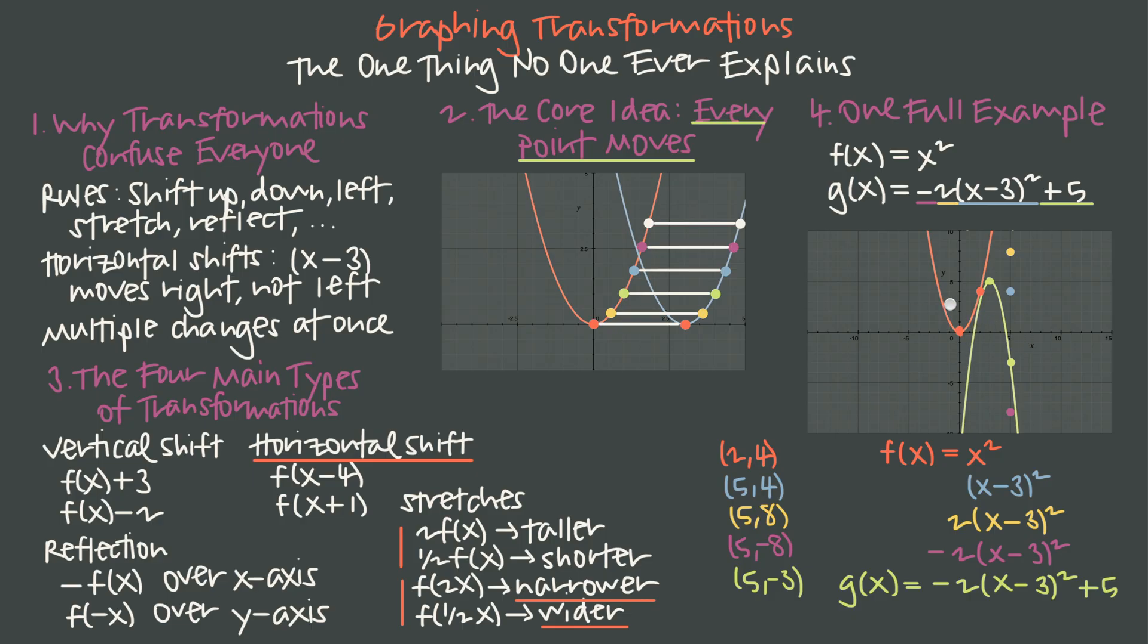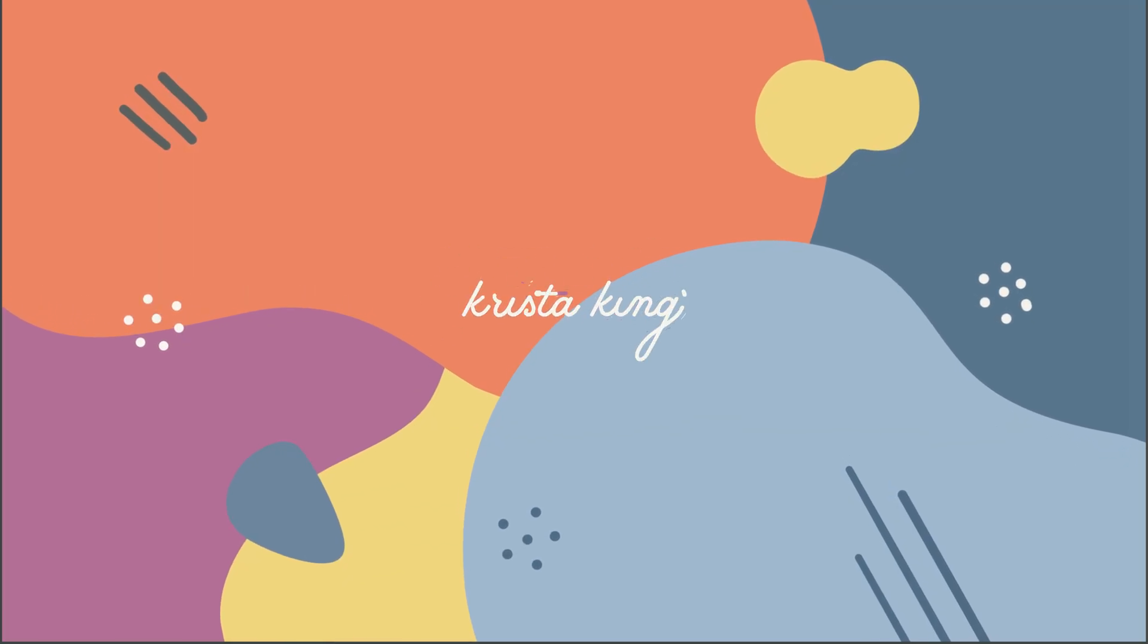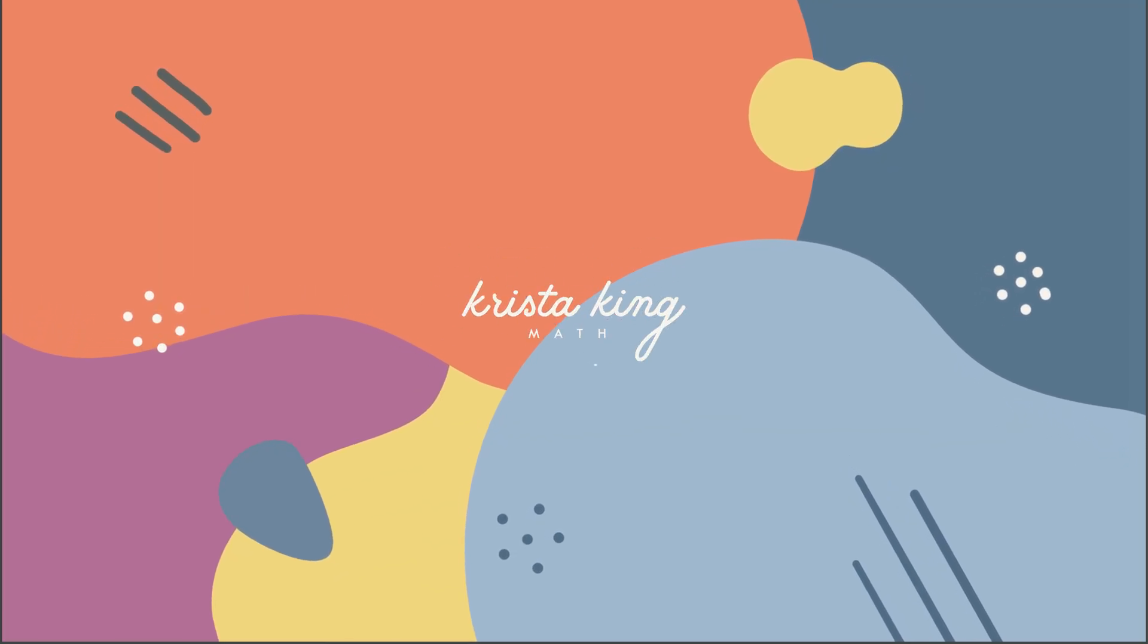Once we stop memorizing rules and start tracking points, then transformations turn into a puzzle instead of a pain. We just need to remember this one key idea that transformations just move the graph. They move every point on the original graph to new points on the transformed graph. We always want to start simple and practice one transformation at a time. And then try layering them together, always remembering to start on the inside and work our way toward the outside. Once transformations click, so much of graphing gets easier. If you're ready to keep going or want to explore more, the link in the description takes you right to my courses.